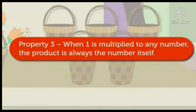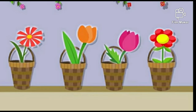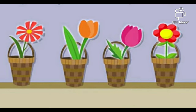Property number two: when one is multiplied by any number, the product is always the number itself. We have four baskets and one flower in each basket.